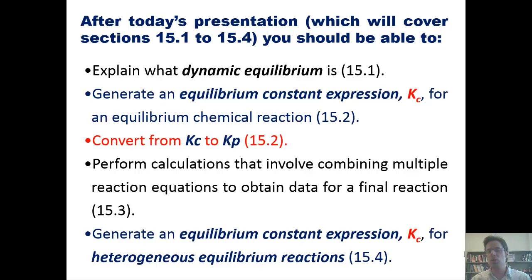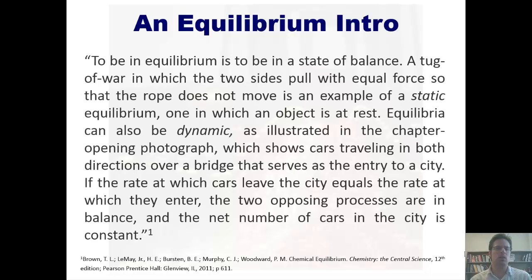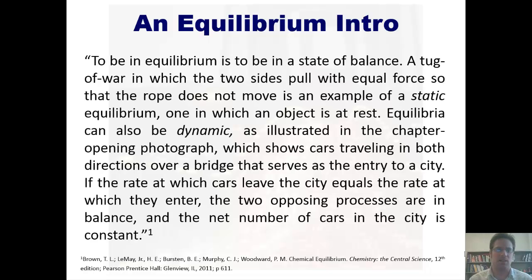I'd like to get started by first introducing you to equilibrium. The word equilibrium actually derives from two Latin terms, equi, which means balanced, and libra, which means weight. Thus, when we have a chemical reaction in equilibrium, we have some type of balanced or equal weight between reactants and products. Or as our book states, to be in equilibrium is to be in a state of balance. A tug of war in which two sides pull with equal force so that the rope does not move is an example of a static equilibrium, one in which an object is at rest.